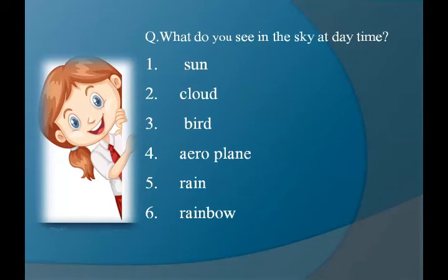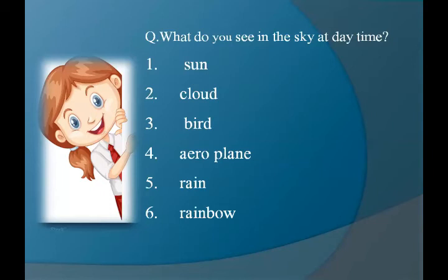The next thing is rainbow. The spelling is R-A-I-N, rain, B-O-W, bow — rainbow. We see rainbow in the sky after the rain stops and when the sun shines through the cloud. Rainbow is an arc of colors and it has seven colors: violet, indigo, blue, green, yellow, orange, and red. These are the things which we see in the sky at daytime: sun, cloud, bird, aeroplane, rain, and rainbow.